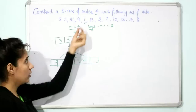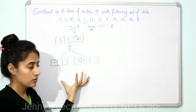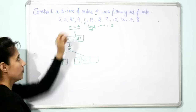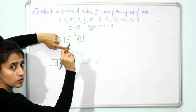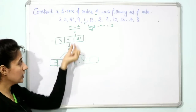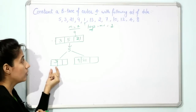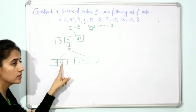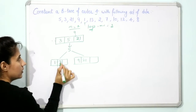The next element is 1. Any new number is always inserted into a leaf node. We always start comparison from the root: 1 is less than 5, so we go to the left part of 5. We reach the node containing 3, which is a leaf node. Since 1 is less than 3, it is inserted to the left of 3. The node becomes [1, 3].